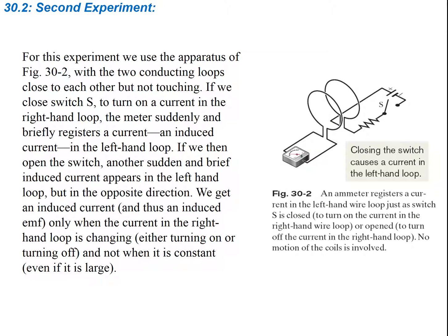The second experiment is a little bit different. We use an apparatus with one circuit containing a switch, an EMF source, and a resistor with a coil of wire, and another circuit connected to an ammeter. With the two conducting loops close to each other but not touching, if we close the switch to turn on a current in the right-hand loop, the meter suddenly and briefly registers an induced current in the left-hand loop.